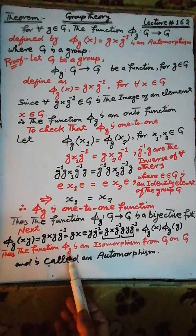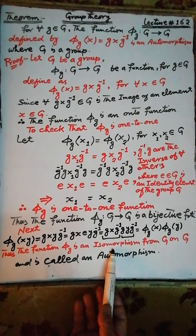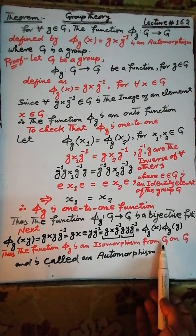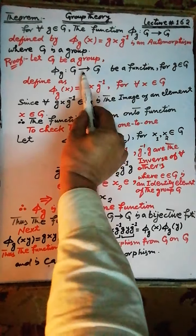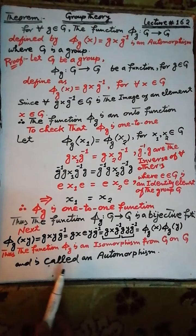Thus the function π(g) is an isomorphism from the group G to the group G, and is therefore called an automorphism of the group G.